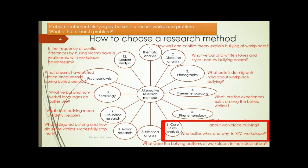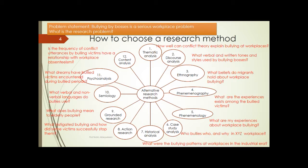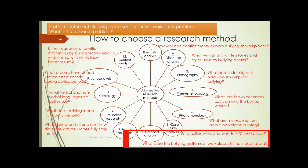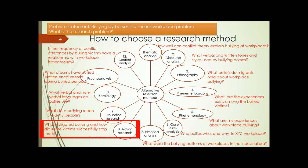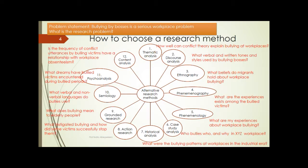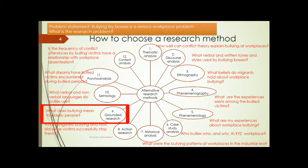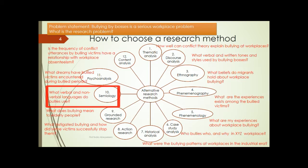Seventh, historical analysis: what were the bullying patterns at workplaces in the industrial era? Eighth, action research: what instigated bullying and how did victims successfully stop them? Ninth, grounded research to build a theory: what does bullying mean to elderly people? So if there is no theory, we can look at data to the point of saturation and build a theory. Tenth, semiology: what verbal and non-verbal languages do bullies use?